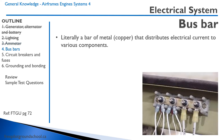A bus bar is literally a bar of metal — copper or aluminum — that distributes electrical current to various components. Here is a photograph of a bus bar. Power goes in to power the bus, and then various things like radios are hooked up to it. This might be an avionics bus, so you would have 14 volts going in from the alternator, then a switch, and then all your radio power connected to the bus bar.